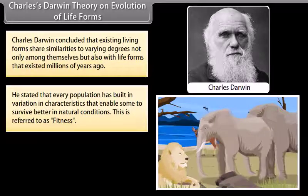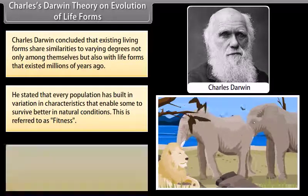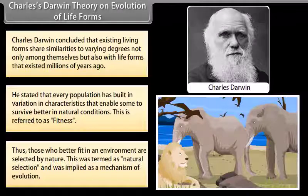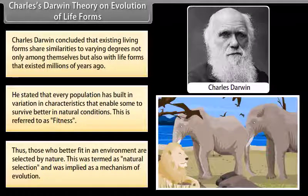He stated that every population has built-in variation in characteristics that enabled some to survive better in natural conditions. This is referred to as fitness. Thus, those who better fit in an environment are selected by nature. This was termed as natural selection and was implied as a mechanism of evolution.